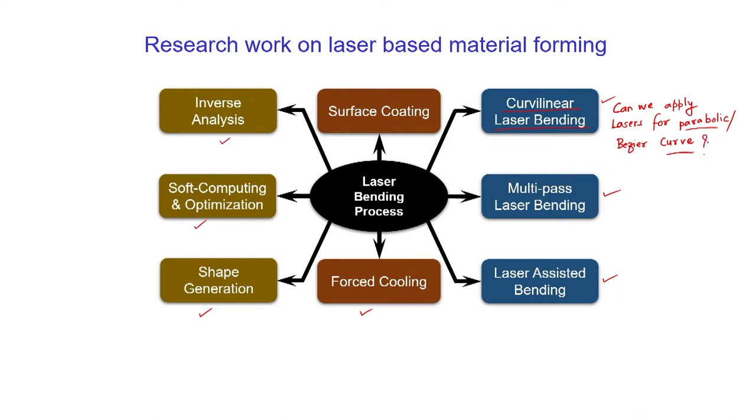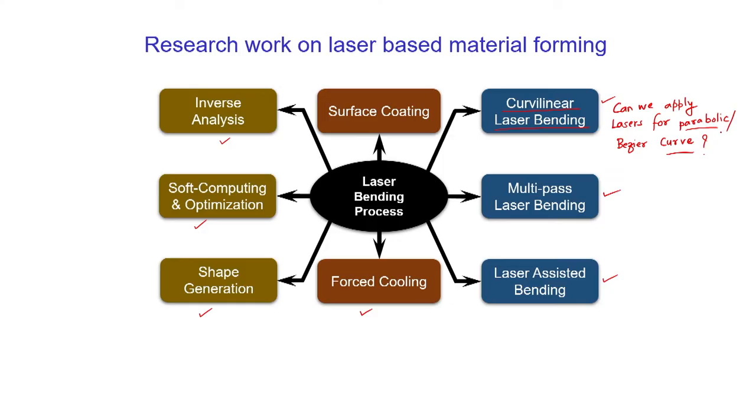When a laser is applied linearly, non-uniform bend angles are produced along the scan line — the bend angle is lower at the ends and higher in the middle. This non-uniformity can be reduced by using non-linear, curvilinear laser bending. Curvilinear laser bending can also be used to deform metal sheets for 3D shape generation.